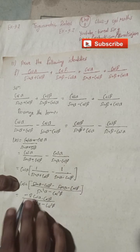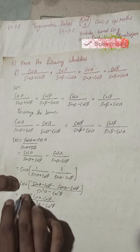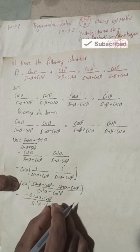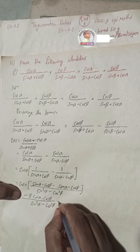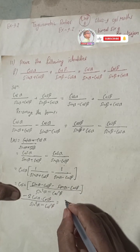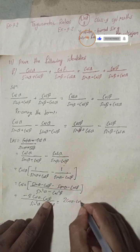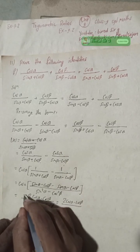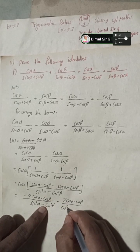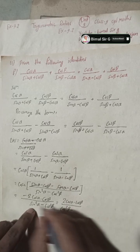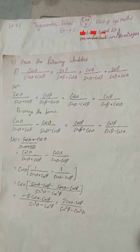Alternatively, taking the minus inside gives plus and minus terms. This can also be written as 2 cos alpha cos beta over cos squared beta minus sin squared alpha. Both forms are equivalent. The final form of LHS is 2 cos alpha cos beta over cos squared beta minus sin squared alpha.